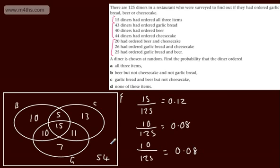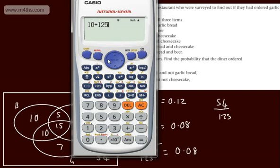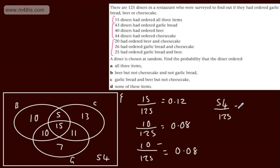And then finally, none of these items, 54 over 125, which will give us now, let's put that in the calculator. So what we'll have is 54 divided by 125, and that gives us now a total of 0.432.